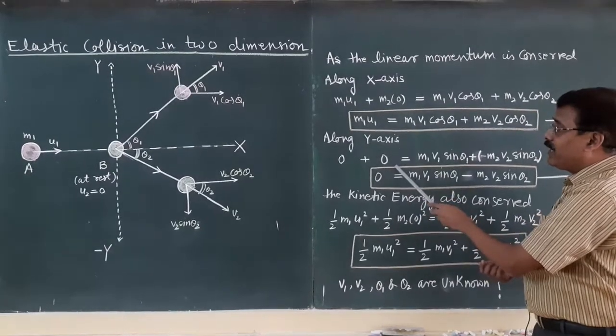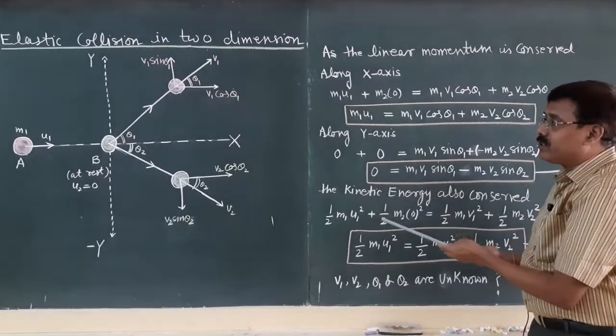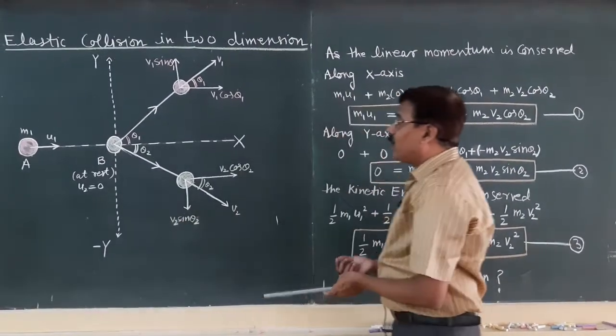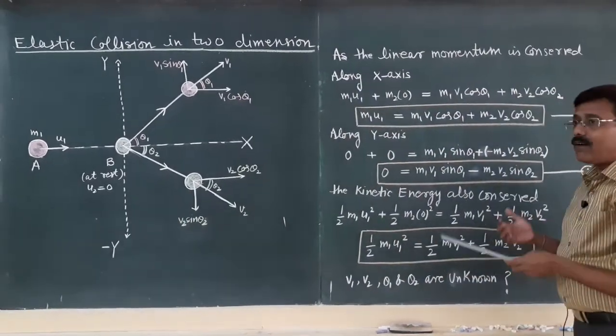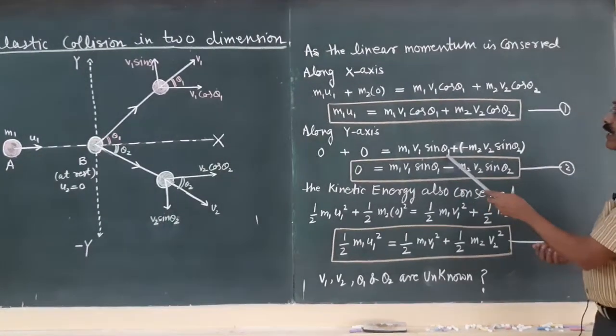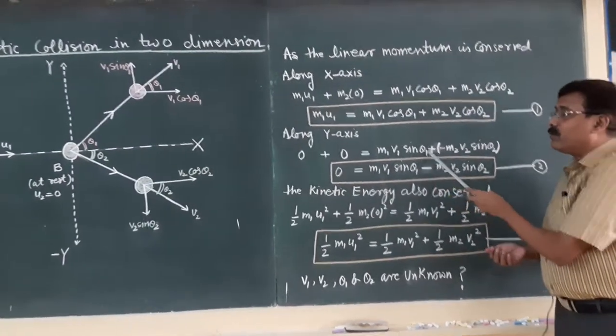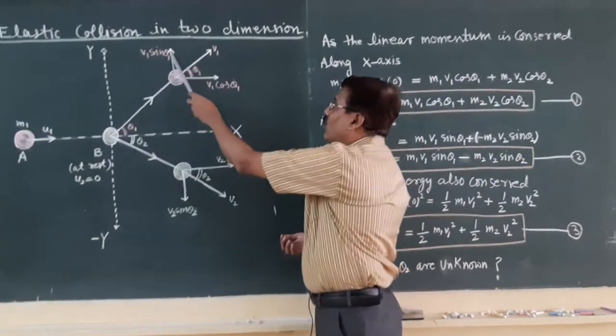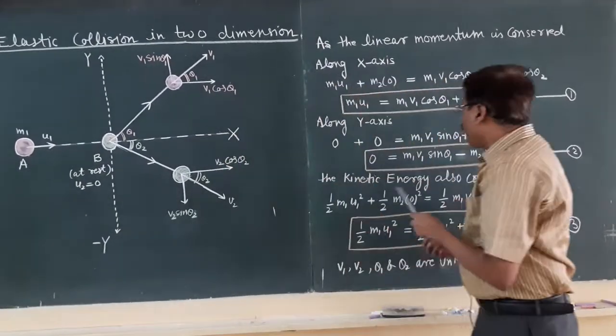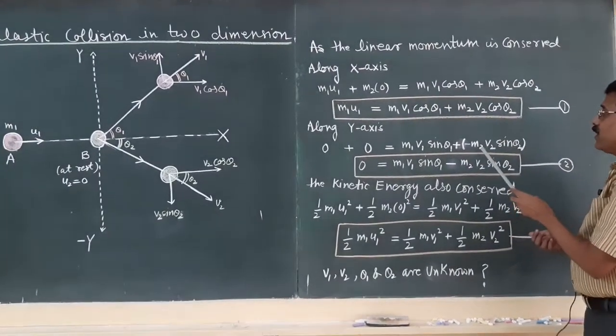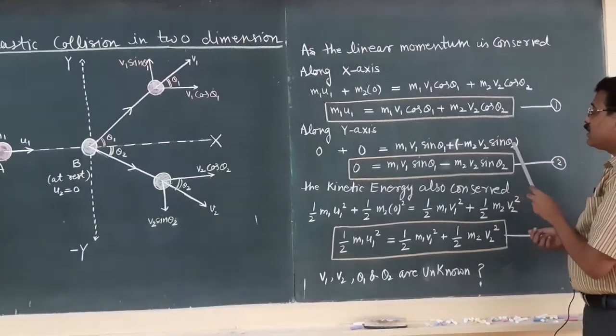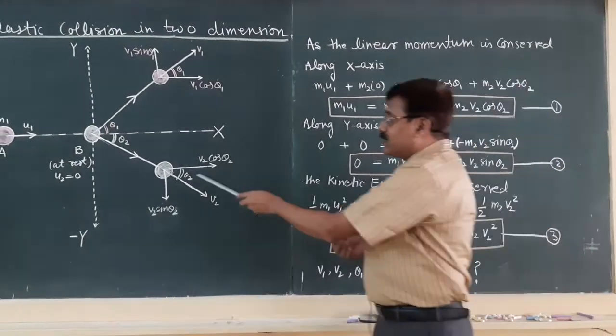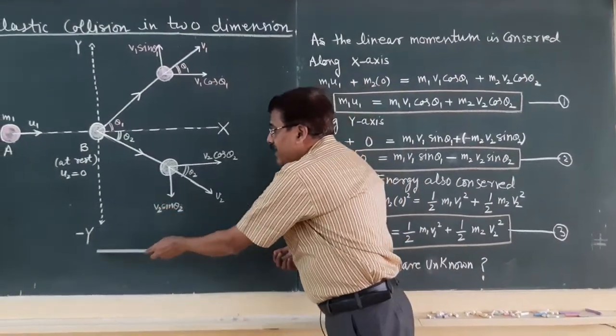The momentum along y axis, if you come to the momentum after the collision, m1 v1 sin theta 1 will be the momentum of object A along y axis. And what will be the momentum of second object? It will be m2 v2 sin theta 2 with minus sin theta 2 because this is along the minus y axis.